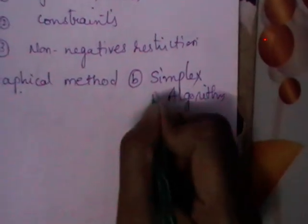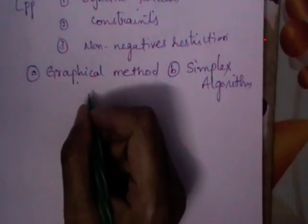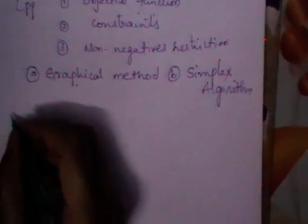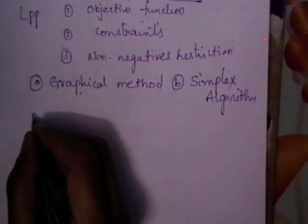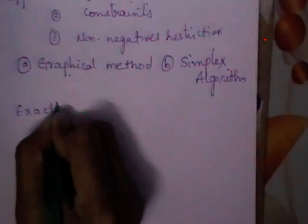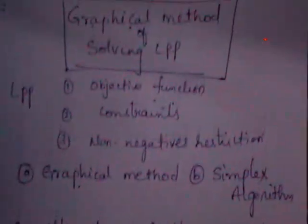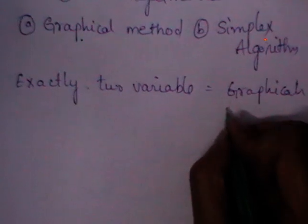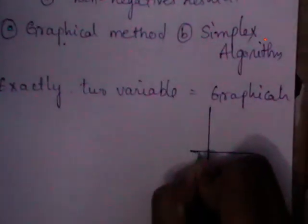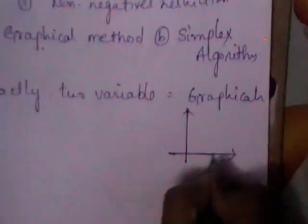The graphical method is used when we have exactly two variables. Whenever a given LPP involves only two variables, we use the graphical method, because representation on a bivariate axis is much easier than on a three-dimensional one.